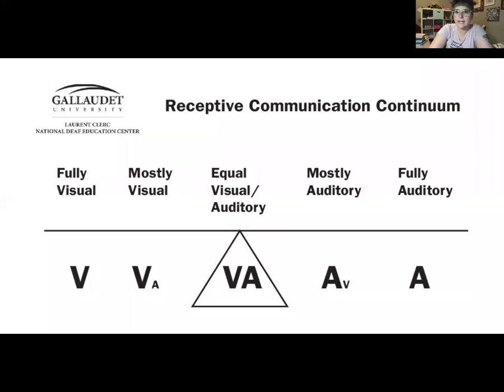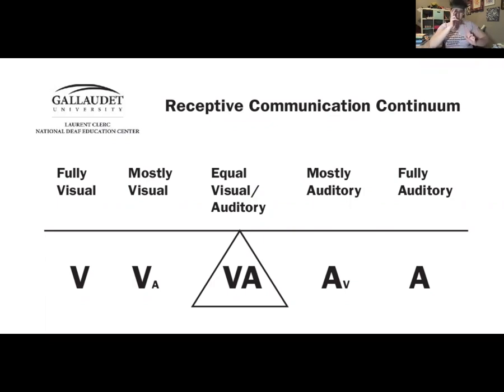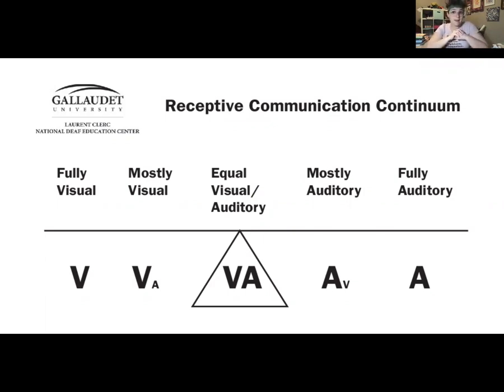I'm going to share my screen with you really quick. I have a visual here — this is our Receptive Communication Continuum. You can see that on one end we have a fully visual person, meaning they are not using any auditory stimulus to take in information. They are only taking in information visually, so we would want to make sure that we are signing, fully signing very clearly with that student.